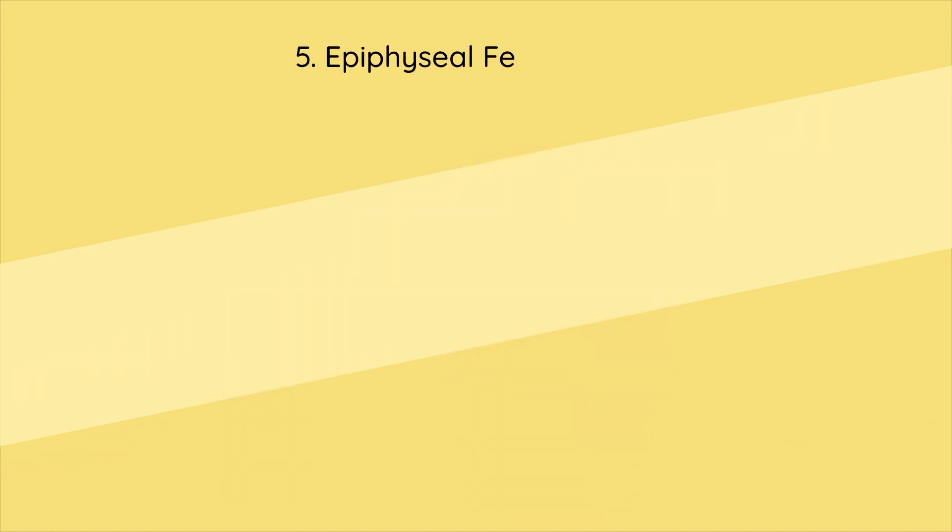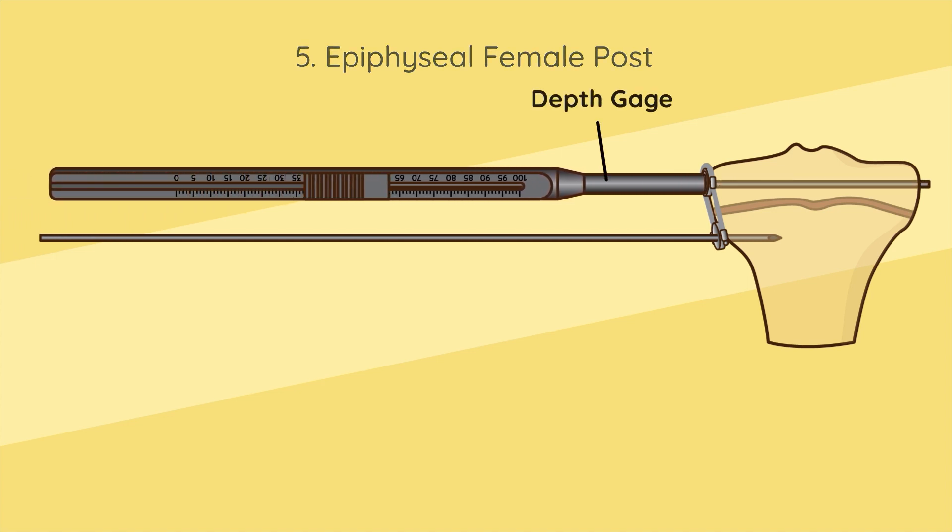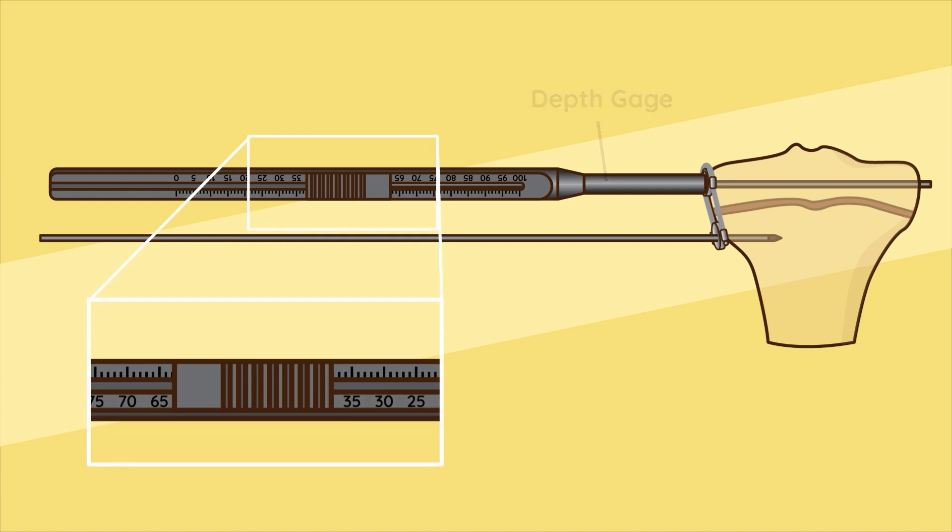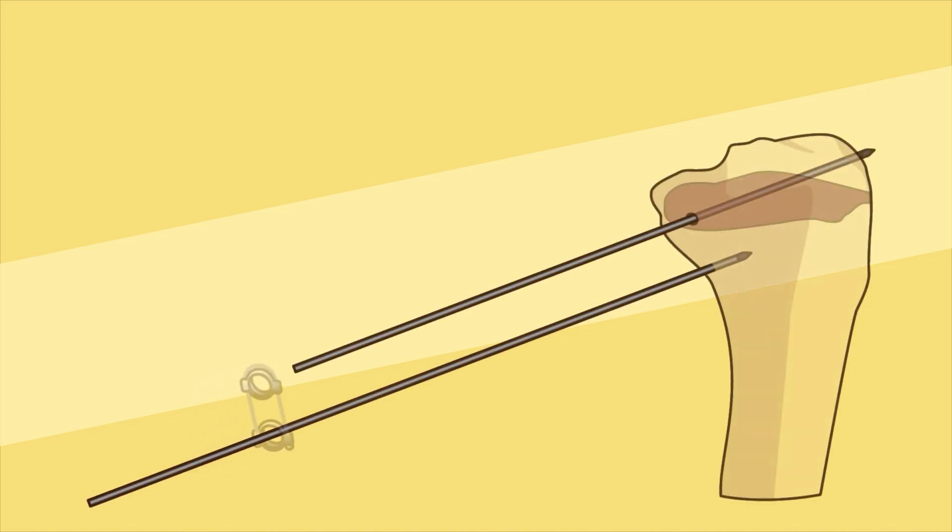Step five - epiphyseal female post: Measure the length of the channel with the depth gauge. If the measurement falls between two lengths, round down to the nearest five to ensure proper threading into the cortex. In the example, for a 63 millimeter measurement, a 60 millimeter post assembly is selected. Slide the desired gyro with the top marking face up along the two guide wires and insert the epiphyseal female post into the gyro.